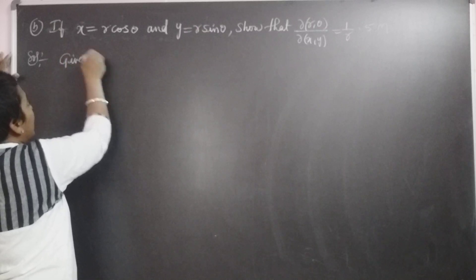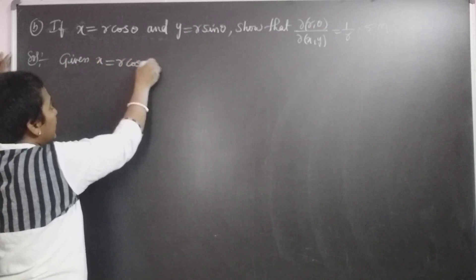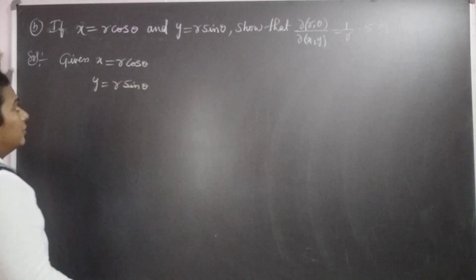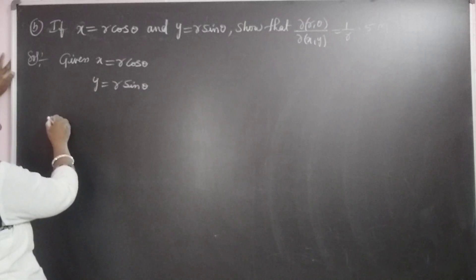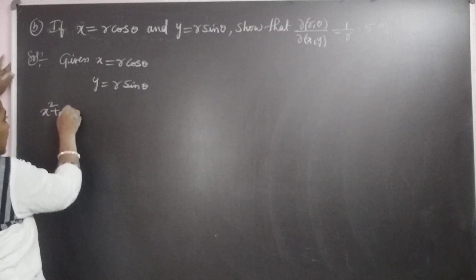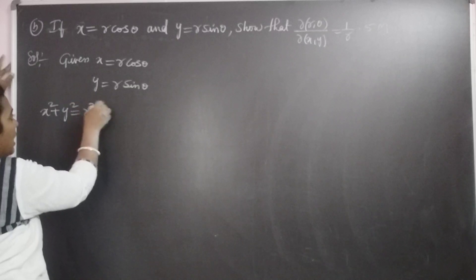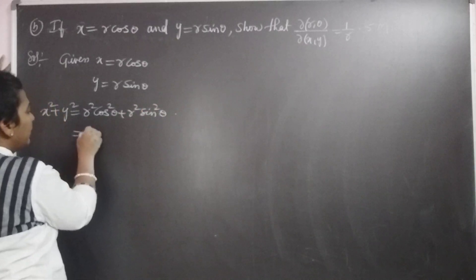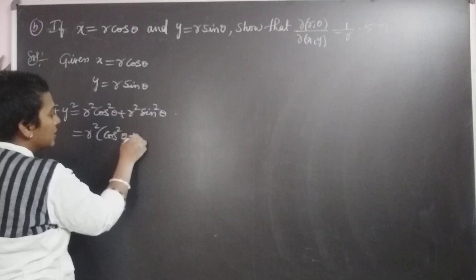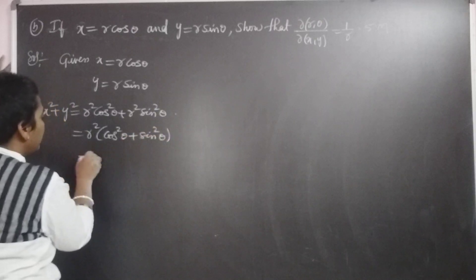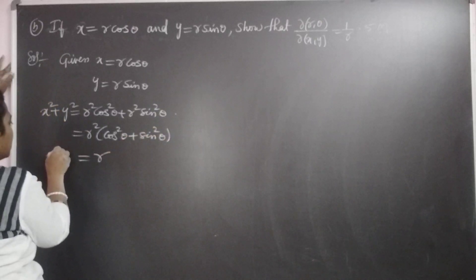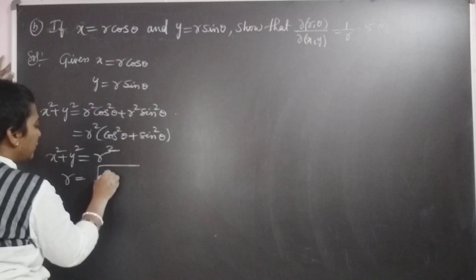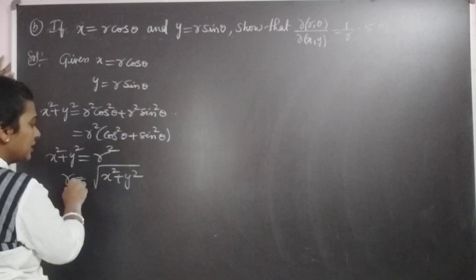Given: x equal to r cos theta, y equal to r sin theta. From the circle equation in parametric form, we know that x² + y² equal to r² cos²θ + r² sin²θ. Taking r² common: cos²θ + sin²θ, which equals 1. Then x² + y² equal to r², so r equal to √(x² + y²).